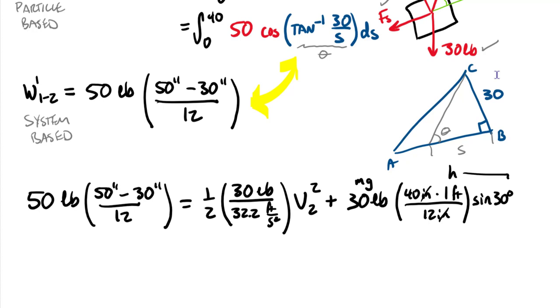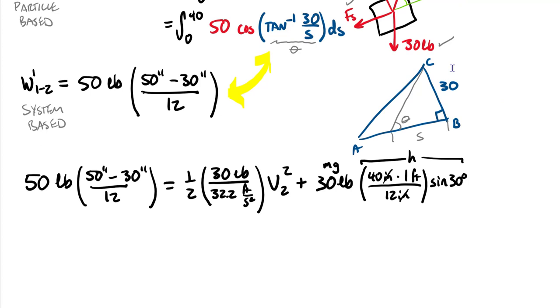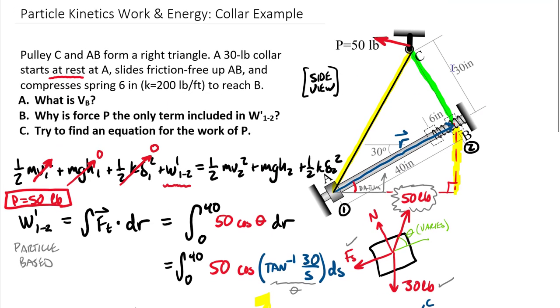The last term we have is the spring energy, always positive because we square the delta term. That's one half, my k value is 200 in pounds per foot. Make sure to put our delta in feet as well - six inches is one half foot, and we square the delta term. With all of these different values, we can compute v2. Plugging through the numbers, we find that v2 equals 4.23. Since we converted everything into feet instead of inches, this would be in feet per second. That is my final velocity, call it v2 or vb, the velocity at the end point, at point B.